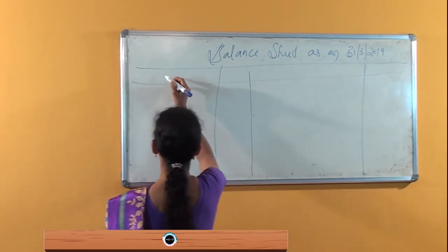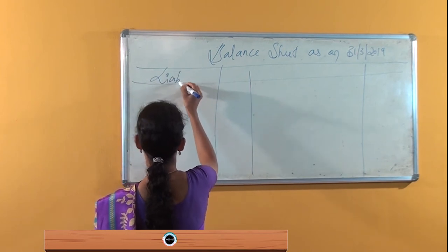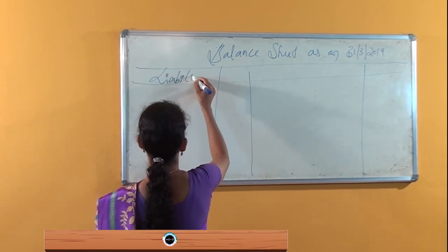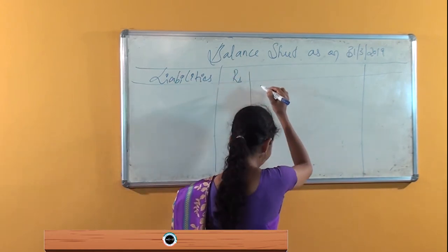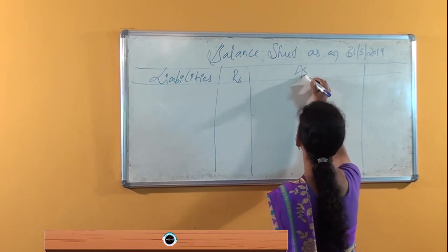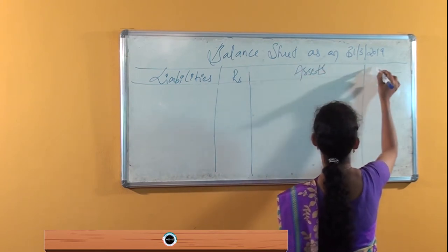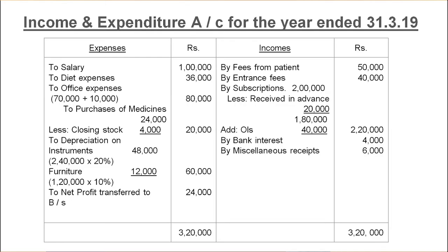So under the assets side, the last entry is outstanding subscription, which was not written in the last session. Outstanding subscription is 40,000.